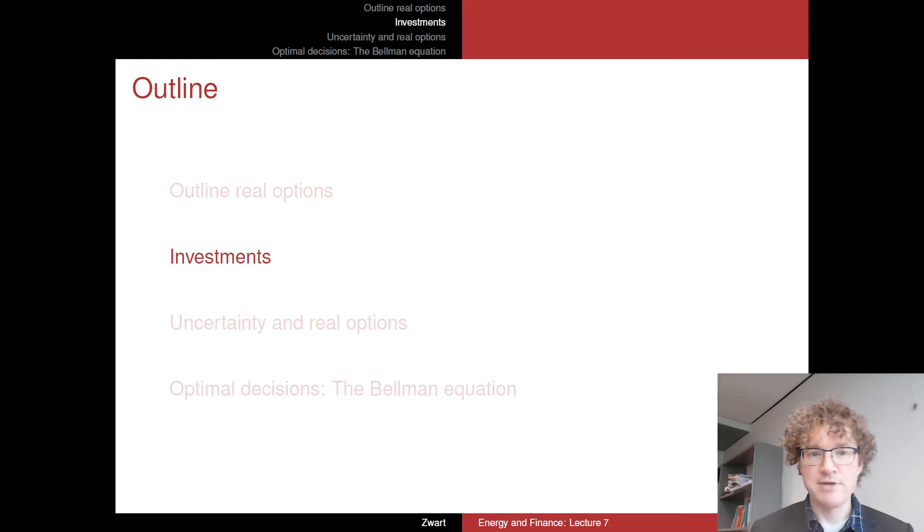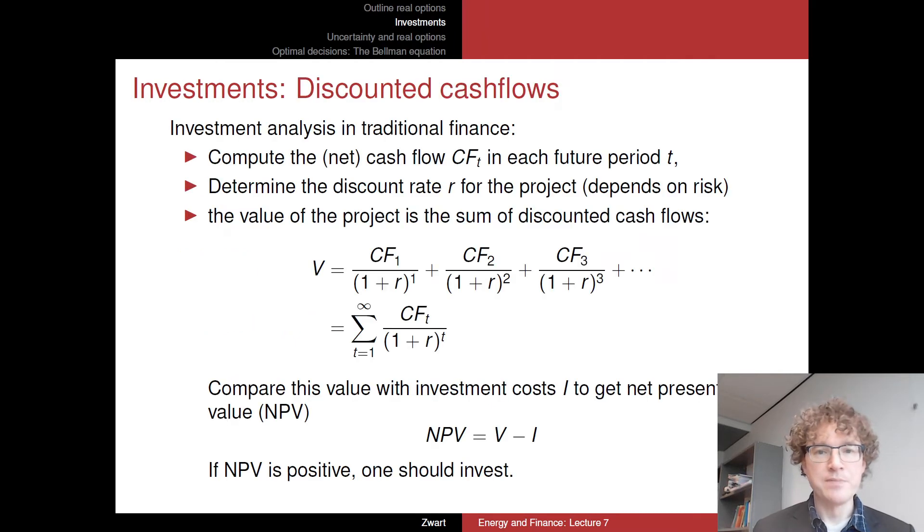So let's have a look at investments and let's review what we know about that very briefly. The traditional analysis of investments in finance is that of discounted cash flow. What that means is you want to compute the net cash flow, called CF for cash flow, in each future period of time t.